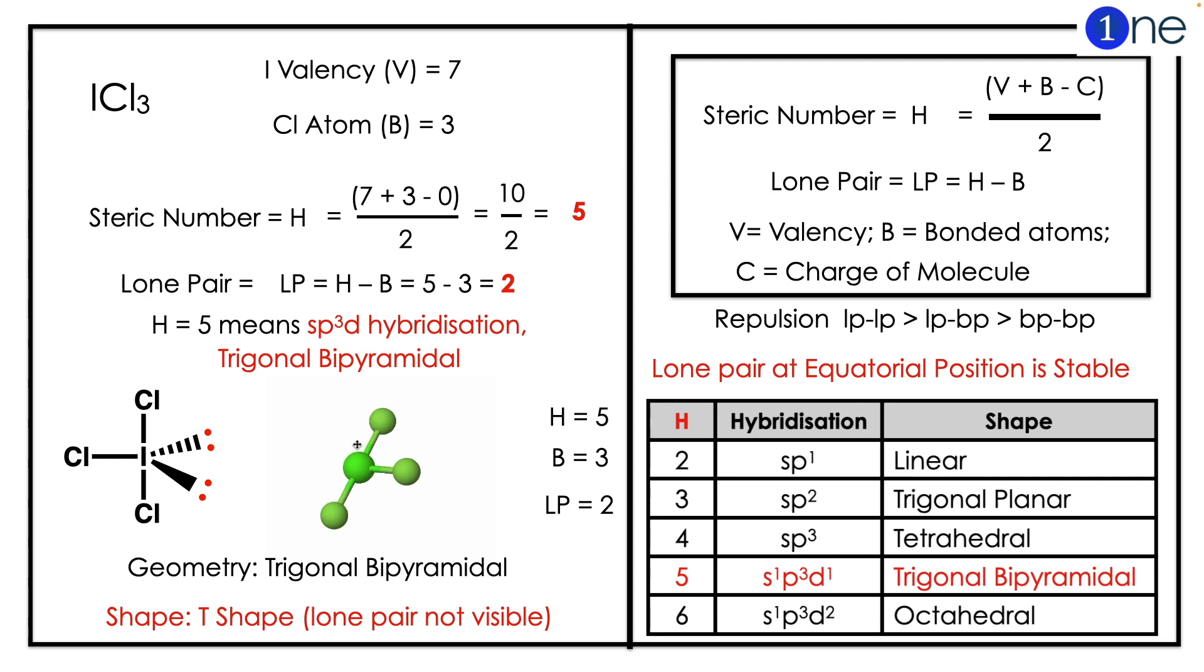Lone pair will be H minus B, which equals to five minus three equals two. So sp3d hybridization and trigonal bipyramidal. The shape of the structure will be T-shaped because lone pair is not visible. The lone pair occupy equatorial position.